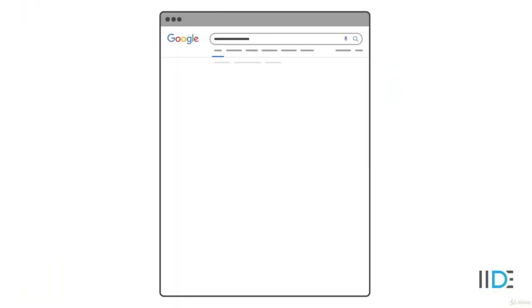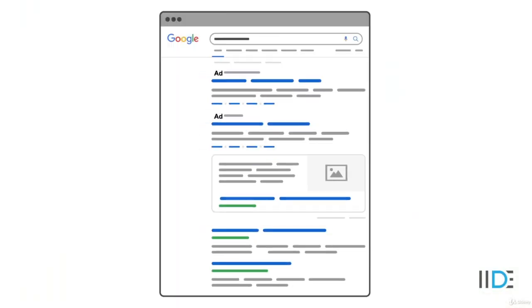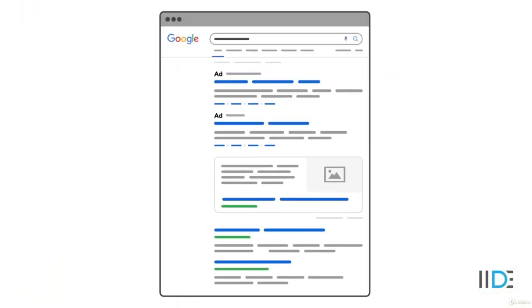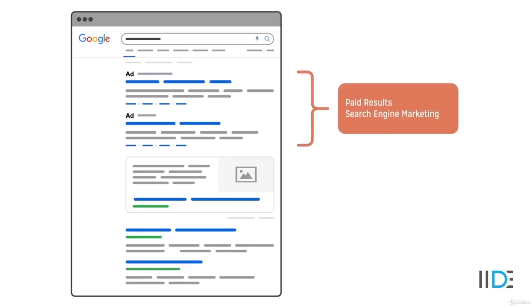If you forgot what search engine marketing is, look at this screen again. When you type something on Google, what comes on the top as an ad is known as search engine marketing. So if your website is not ranking on Google, pay Google to come as an ad so that when someone types something related to your business, they come to your website.